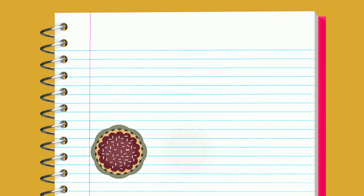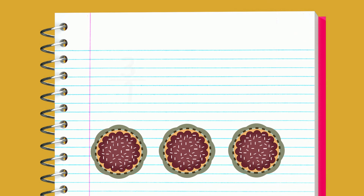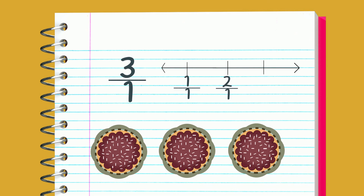You can also represent a fraction on a number line when you have more than one whole. In this case we have three cakes, so divide the number line into three equal pieces. The first is one over one, or one whole, then two over one, and three over one.